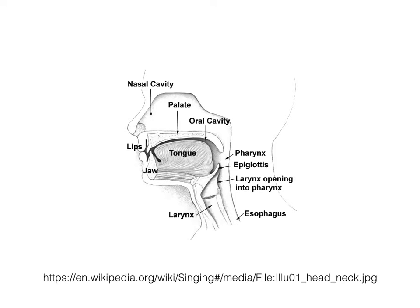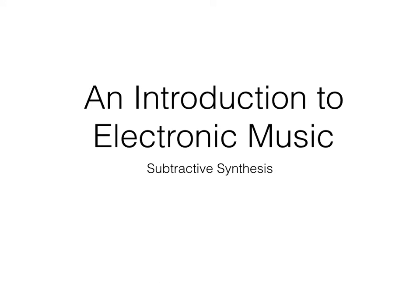An example of a natural subtractive synthesis process is the human voice. When we make sound, we change the shape of our mouth, tongue, and throat to soften and remove parts of the otherwise white noise sound.